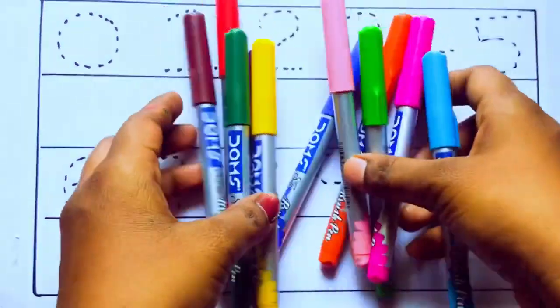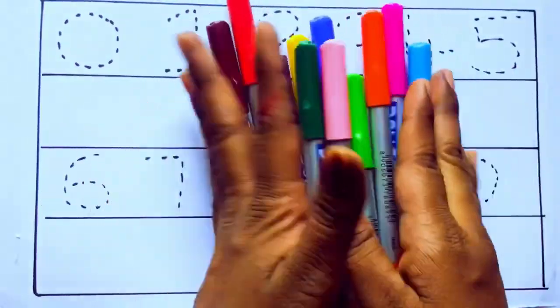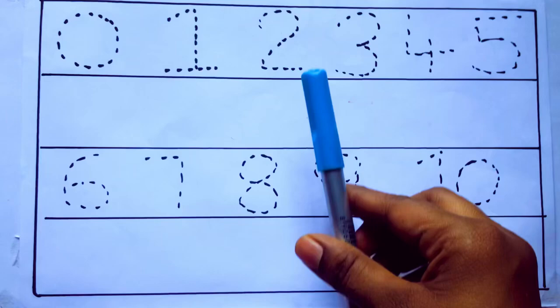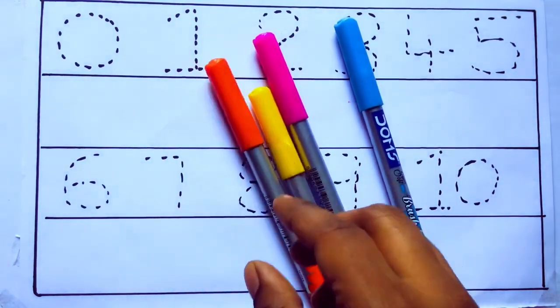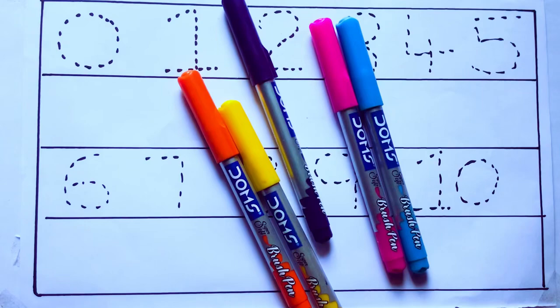Let's learn some colors. These are all the color pencils. Let's learn the names. Sky blue color, pink color, yellow color, orange color, violet color.